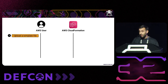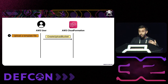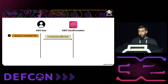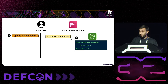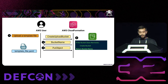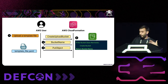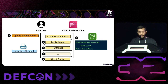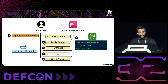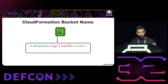Behind the scenes, when the user uploads the template file via the GUI, every operation on AWS is eventually an API request. The CreateUploadBucket API request is invoked, CloudFormation creates an S3 bucket, returns the bucket name, and then the PutObject API request uploads the template file. Eventually the user submits the stack, causing CloudFormation to deploy all resources in the template. Now let's focus on the bucket naming pattern.